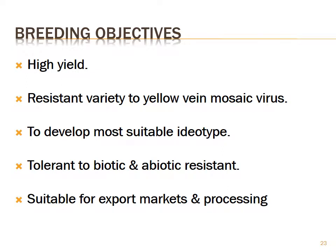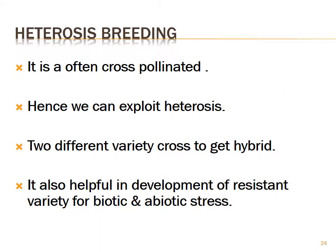Breeding objectives of okra: high yield, resistant variety to yellow vein mosaic virus — which is a major viral disease — and development of a most suitable ideotype. Tolerant to biotic and abiotic stress. Suitable for export market and processing. Heterosis breeding in Bindi: it is often cross-pollinated, hence we can exploit heterosis easily. Two different varieties are crossed to get a hybrid, which is useful in developing resistant varieties for biotic and abiotic stress.